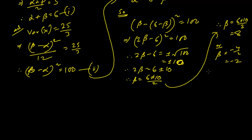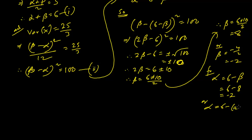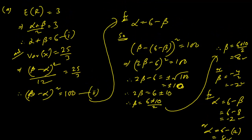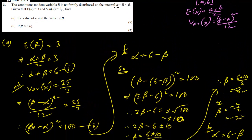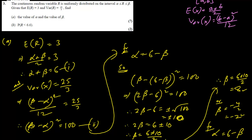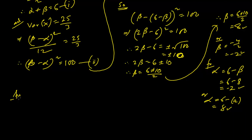Now let's find the value of alpha. Using alpha = 6 − beta: if beta is 8, then alpha = 6 − 8 = −2. If beta is −2, then alpha = 6 − (−2) = 8. Since the question states alpha is the lower bound and beta is the upper bound, the answer is alpha = −2 and beta = 8.